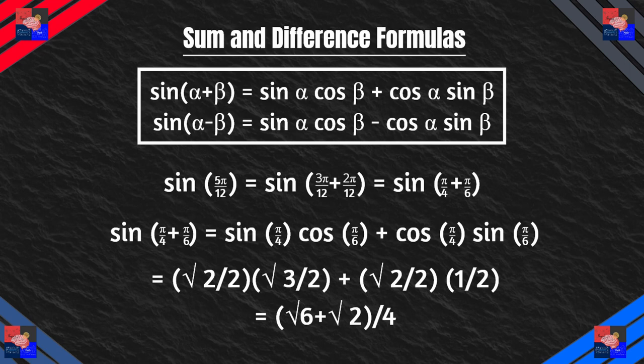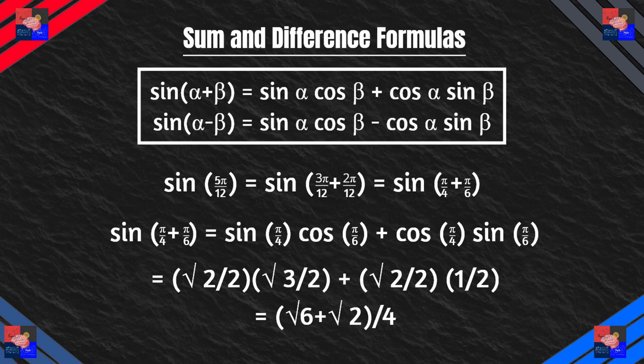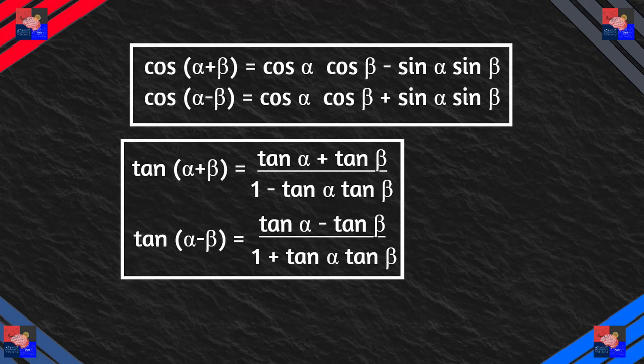5π/12 is not on the unit circle, but it can be expressed as 2π/12 plus 3π/12, which reduces to π/4 plus π/6. So sine(π/4 + π/6) — we assign π/4 as alpha — gives us sine(π/4)cosine(π/6) plus cosine(π/4)sine(π/6), and this simplifies to (√6 + √2)/4.